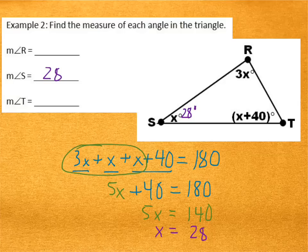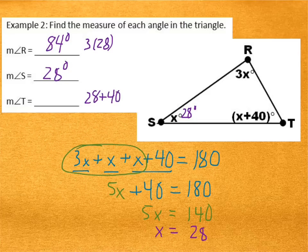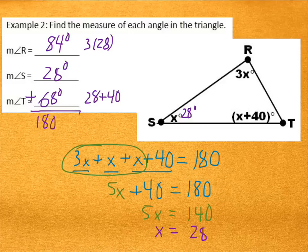Then, the measure of R is 3 times 28 degrees. So that's 84 degrees. Then T would be 28 degrees plus 40. And so that would be 68 degrees. And if you ever wanted to check, you could add all of those up and just verify that they make 180 degrees. Okay, so let's keep going.